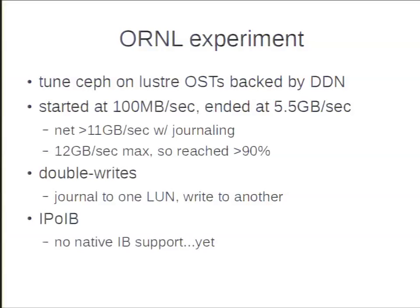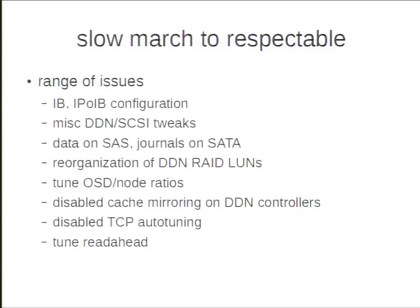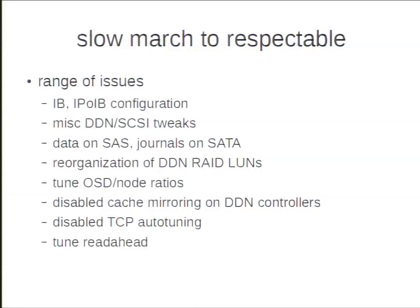There were a couple of caveats. Ceph does double writes because it has a write-ahead journal before writing data to the file system — designed to be used with flash or NVRAM the way a NetApp array would. We were also using IP over InfiniBand because there's no native RDMA support yet. There was a long series of things to tune: configuring the InfiniBand network, reconfiguring LUNs on the DDN, choosing which disk the journals and data went to, tuning OSD ratios, TCP buffer tuning, read-ahead, and so forth. The good news is that once you work through those issues you can get respectable performance, though you can't just plug it in and expect good numbers.